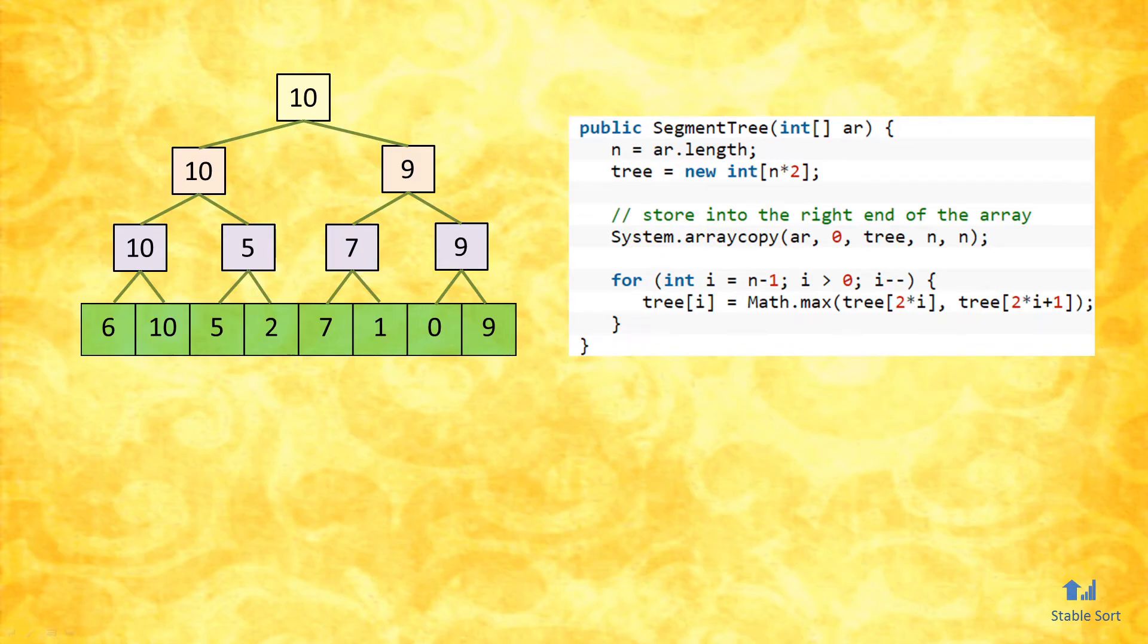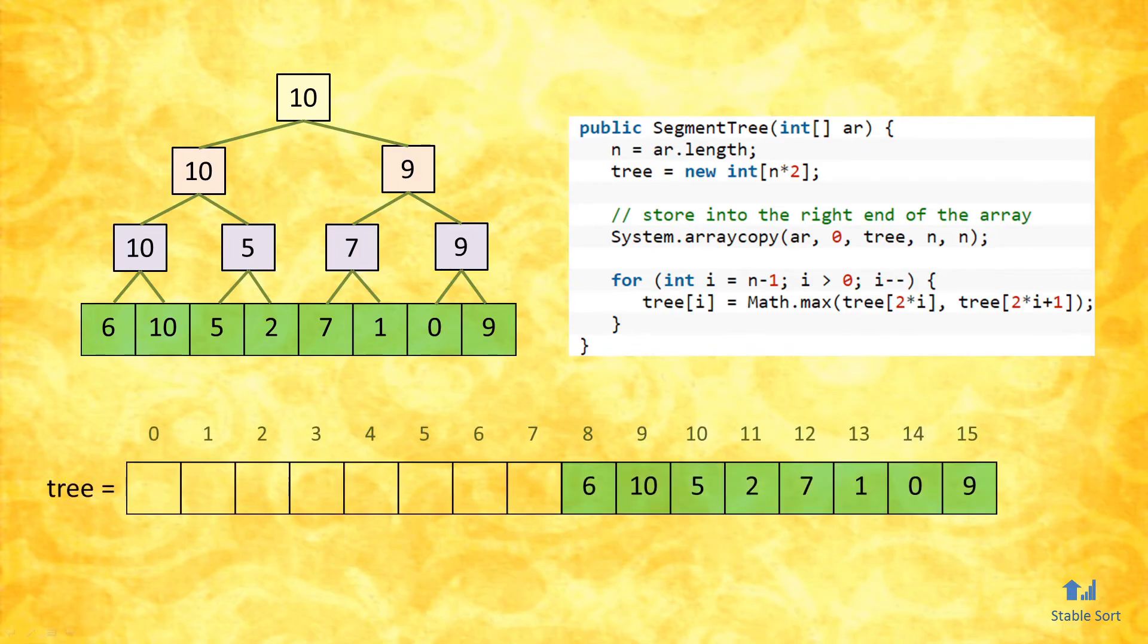It turns out we don't actually need tree nodes with pointers. Instead, we can get away with having an additional array that's twice the size of the input array. Let's take a look at an actual implementation written in Java. Here is a function that constructs the tree. The first thing it does is it creates an array twice the size of n, and then copies the original array into the second half of it. From there on, it goes from right to left, taking the max value of two adjacent elements. If the input array is of length n, then the running time complexity to construct the segment tree is order n.